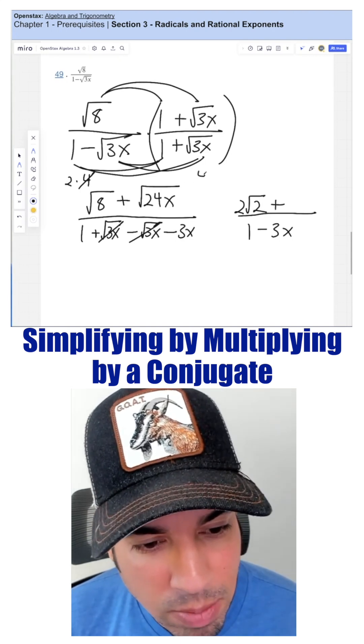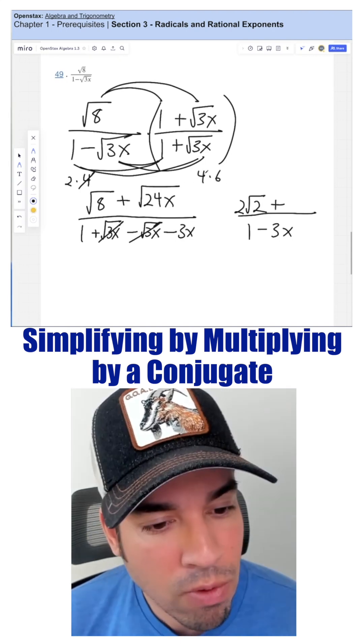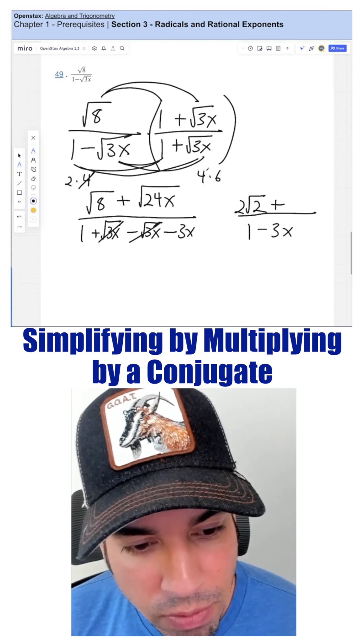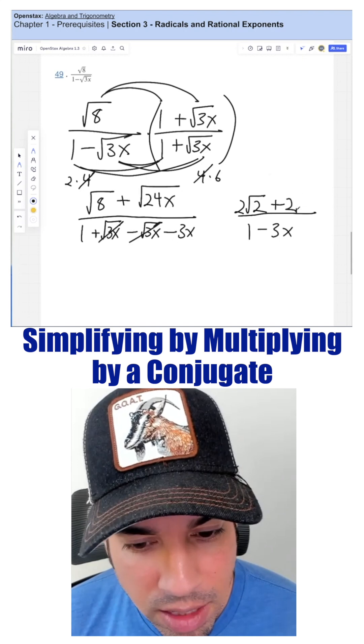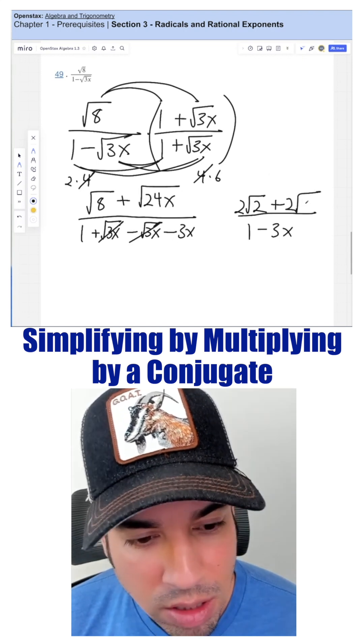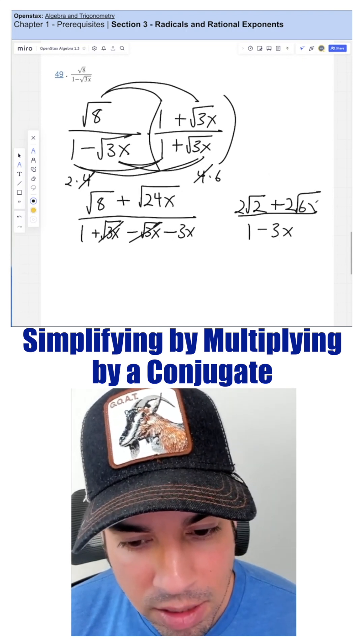With 24, that is the same as 4 times 6. 4 is a perfect square. The square root of 4 is 2, and that's 6, and the x stays trapped inside. So we got 2 times rad 6x.